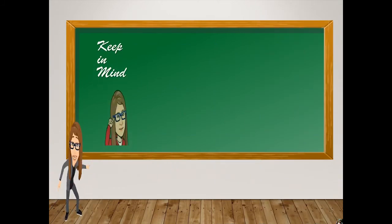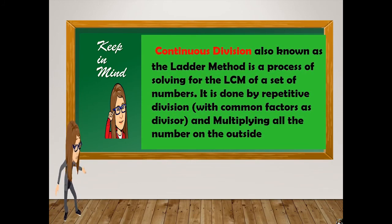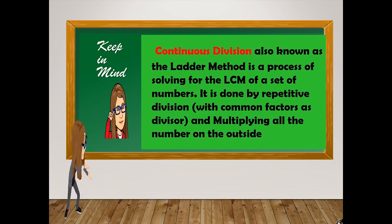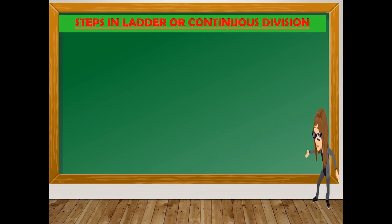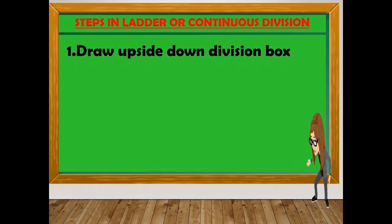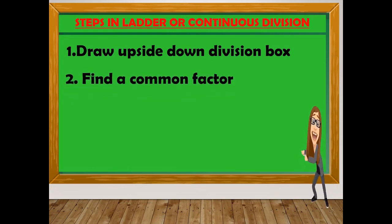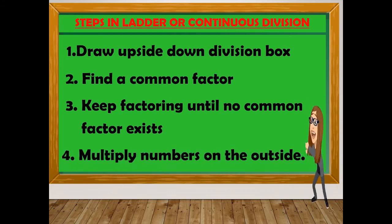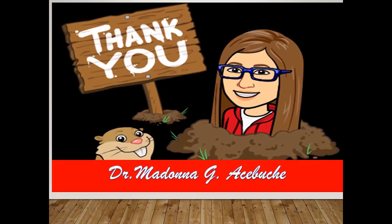Class, keep in mind: continuous division, also known as the ladder method, is a process of solving for the LCM of a set of numbers by repetitive division and multiplying all the numbers on the outside. Steps: draw an upside-down division box, find a common factor, keep factoring until no common factor exists, then multiply the numbers on the outside. I hope you learned something today. This is Teacher. See you on our next lesson. Bye!